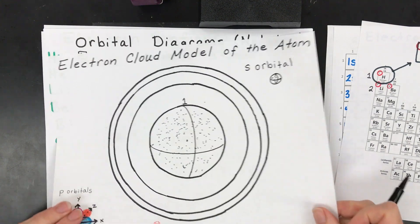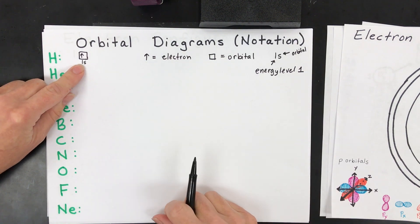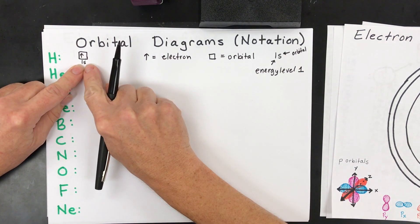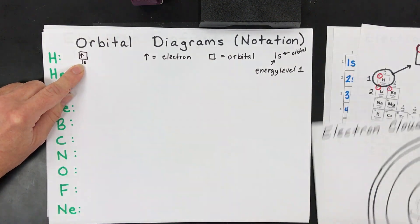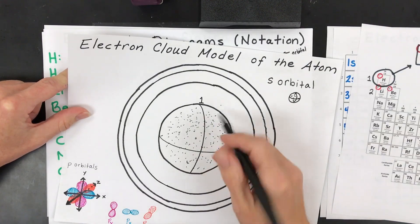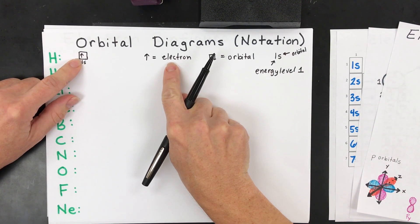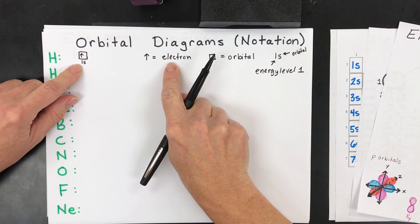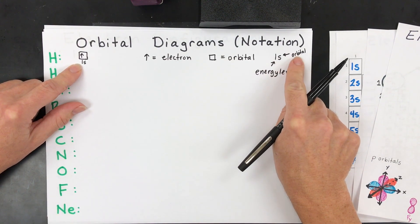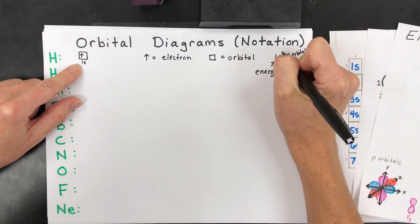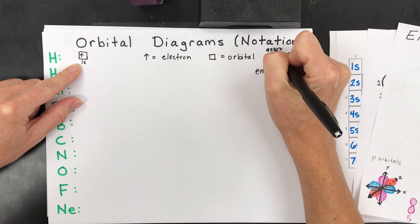So what you'll do next, instead of drawing this cloud model or picture, you will do an orbital diagram next. And what you will have in an orbital diagram is you'll have the box representing the orbital. So instead of drawing this shape, you'll just draw a box. An arrow means you have an electron, so we only have one arrow because there's only one electron in hydrogen. And then the one will be the energy level, and then the S is the orbital. And then the upper number up here is the number of electrons that are in that orbital.